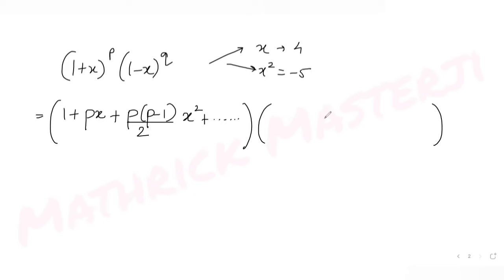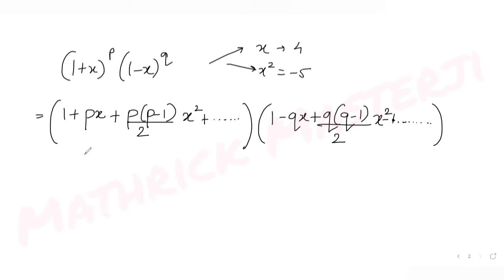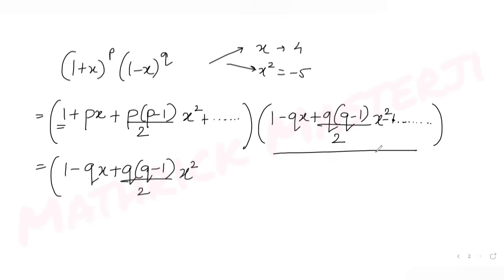For (1 minus x) raised to q, with alternating signs, we get: 1 minus qx plus q(q minus 1) divided by 2 times x squared. Now multiplying the first bracket's constant term (1) with the entire second bracket, keeping only terms up to x squared.